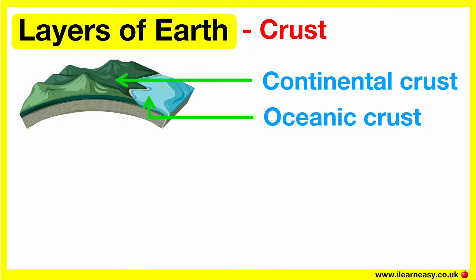The crust is broken into plates like a big jigsaw puzzle. These are known as tectonic plates. These tectonic plates move around very slowly, only a few centimeters every year. But we can't feel this movement unless there is an earthquake. The Earth's crust floats above the next layer, which is the mantle. The Earth's crust only occupies less than 1% of the Earth's volume.